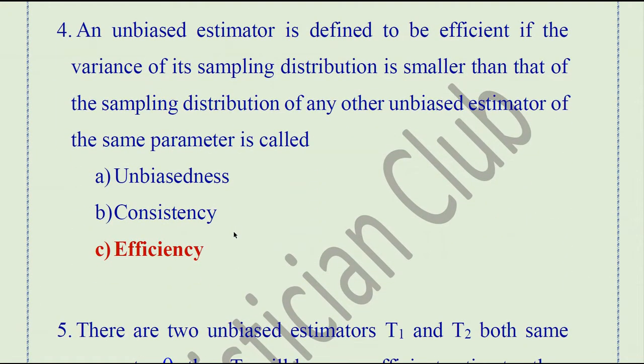Question number 4. An unbiased estimator is defined to be efficient if the variance of its sampling distribution is smaller than that of the sampling distribution of any other unbiased estimator of the same parameter theta. If two distributions have the same parameters and the variance of sampling distribution is smaller than any other estimator, then this property is called efficiency.